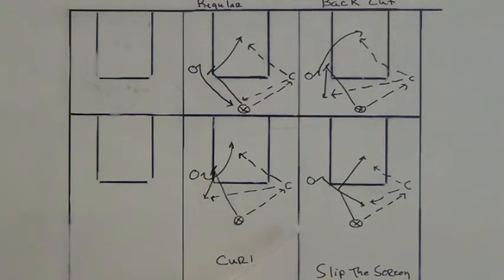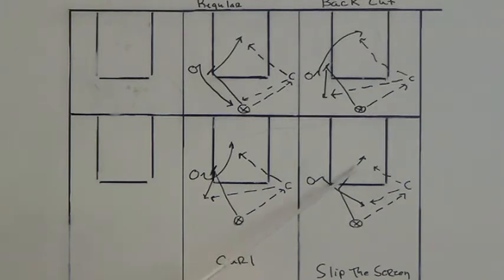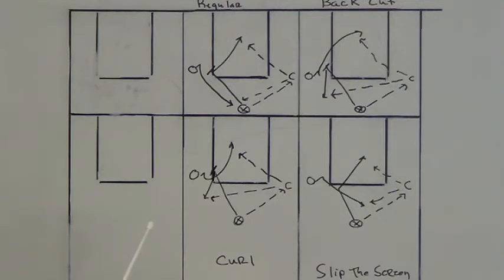The last movement we want to show in this video is what we call slipping the screen, which is a very, very good move if you get it down. Here, the screener goes in to screen but instead of actually completing the screen, he slips it — he makes the cut. The other player has to react by coming out to the top and replacing him there. All of this is rudimentary, but there are some things you need to include when working with players on these four cuts.